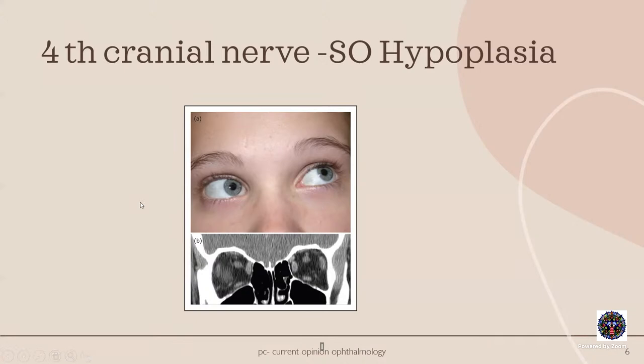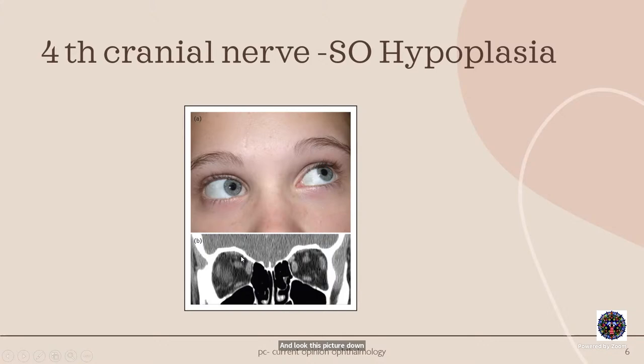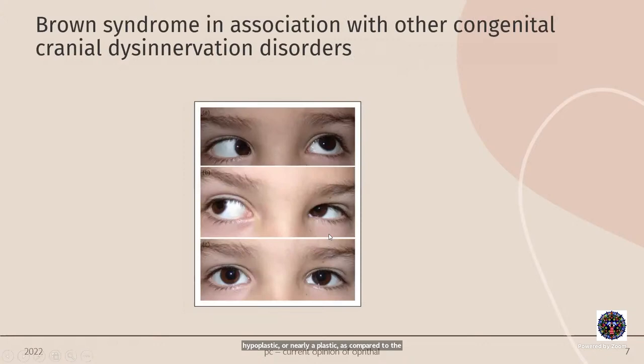Basically, there is a fourth cranial nerve hypoplasia, leading to superior oblique hypoplasia. This child with Brown syndrome in the right eye shows on neuroimaging that the superior oblique muscle is hypoplastic or nearly aplastic compared to the other side. Brown syndrome can also be associated with other CCDDs.